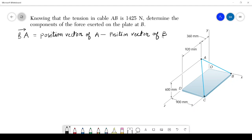Now you know that the coordinates of A are: x is 0, y is 600, and z is 360. And the coordinates of point B are: x is 900, y is 0, and z is 0.